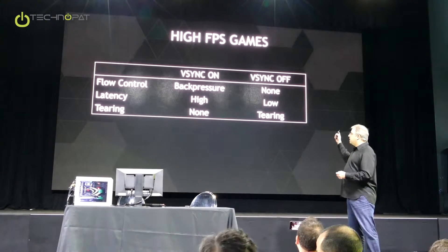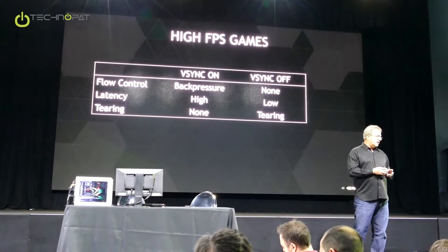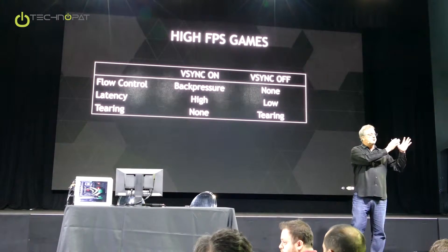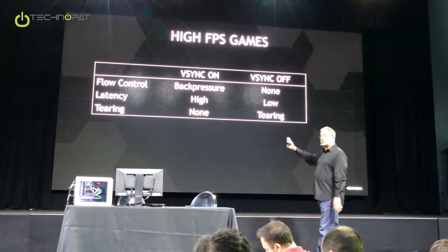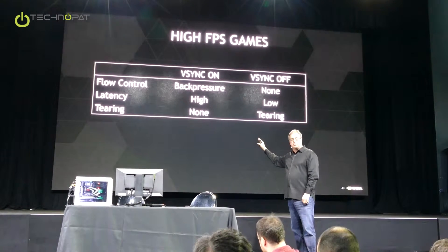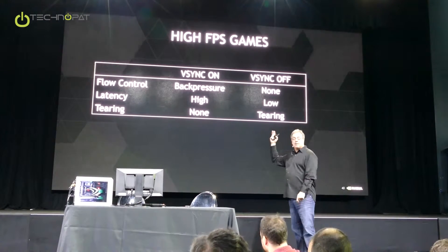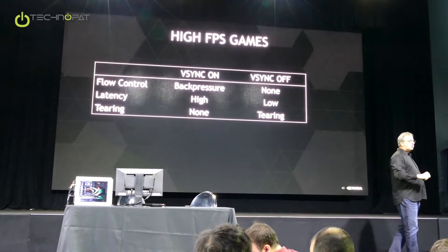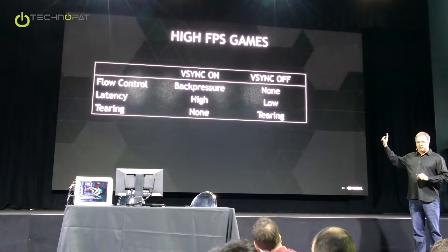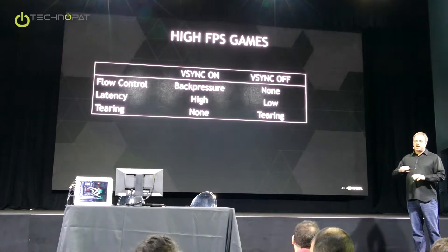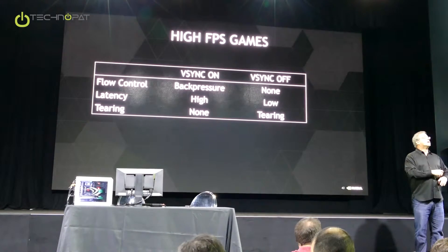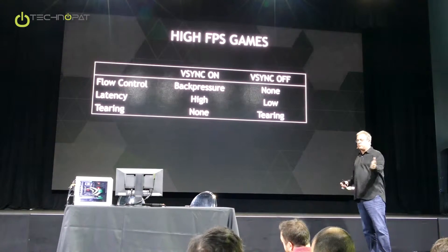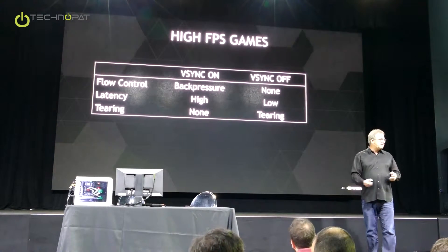The problem with vSync on is that all that back pressure causes latency — sometimes as high as 100 milliseconds in that pipeline. When you turn vSync off, you get very low latency because there's no back pressure. As you move your mouse, that frame gets generated and moves through the pipe very quickly, showing on screen as soon as possible. So the vast majority of competitive gamers are playing with vSync off, but it's a crappy experience because vSync off tears.